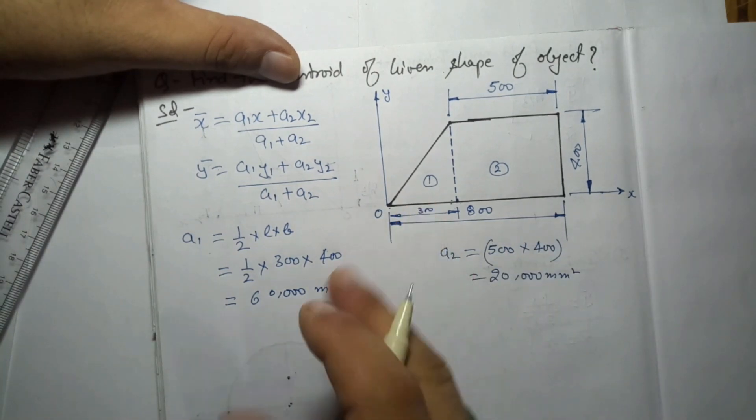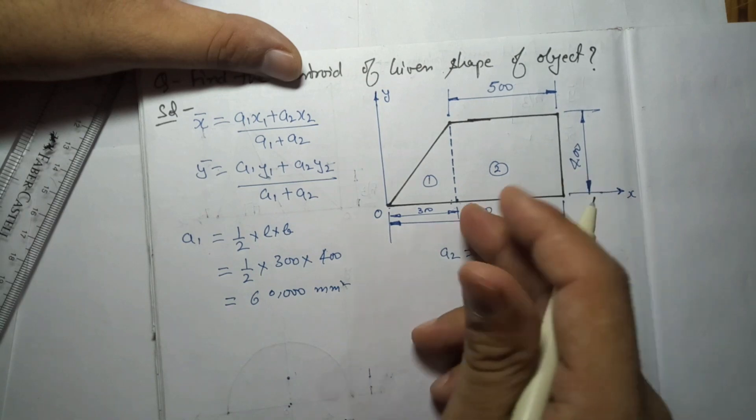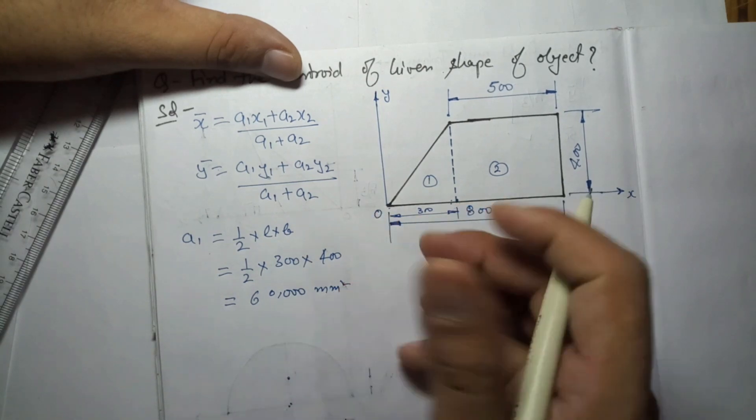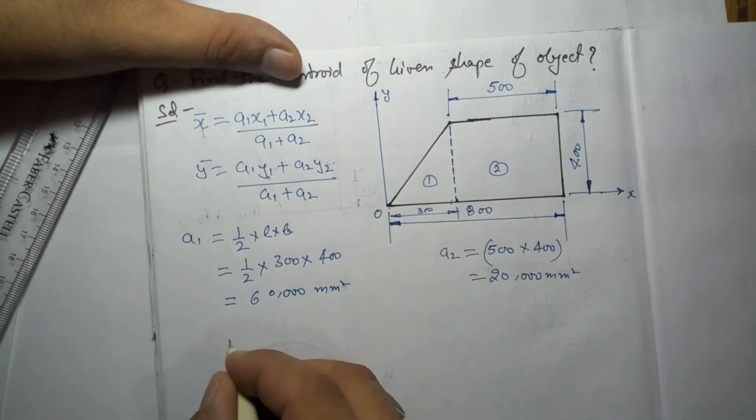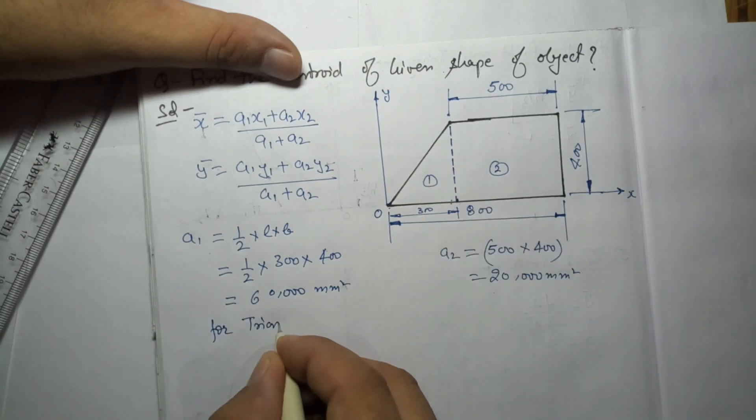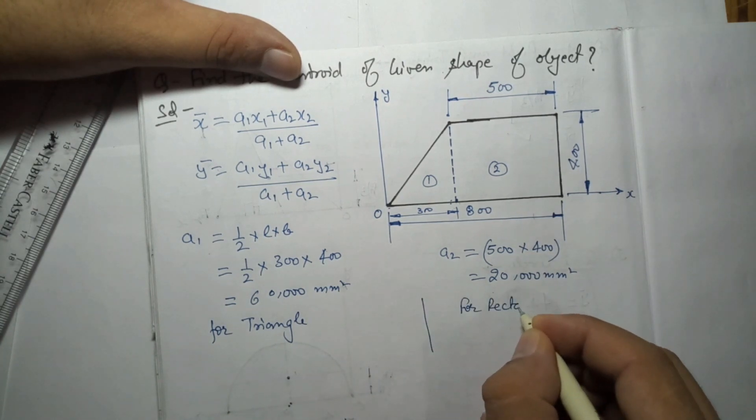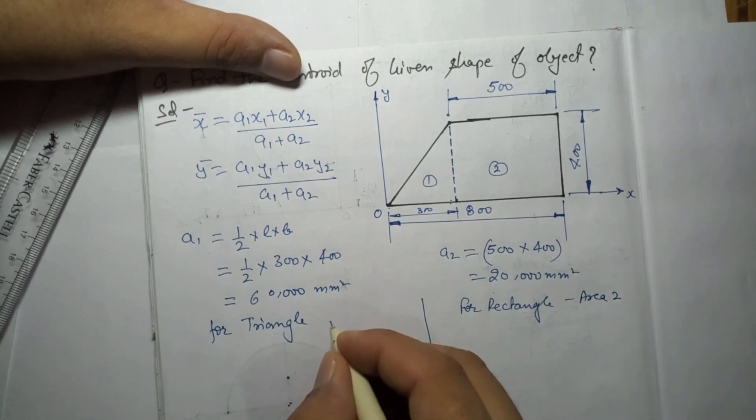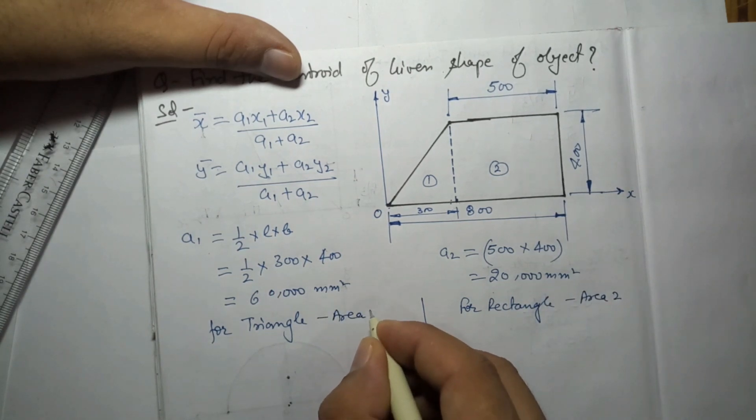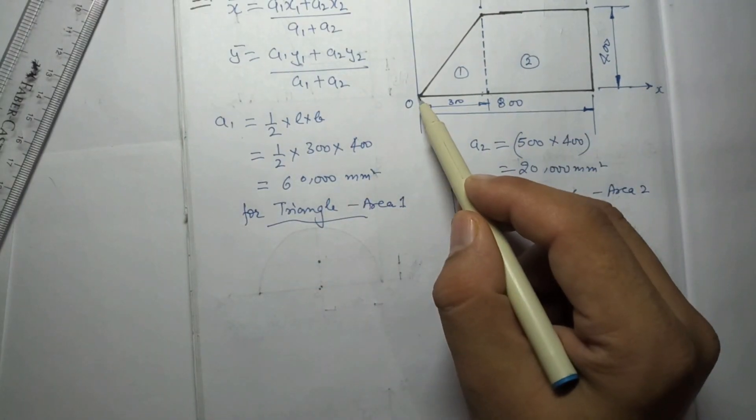Now we will find out the value of x1 and y1, x2 and y2. We will take this object separate. Let's say for this triangle only, where will the centroid lie? First for triangle only, then I will do for rectangle, or you can say in the form of area 2 or area 1, whatever you can take. When we calculate the centroid for area 2, we have to take the same distance from origin.